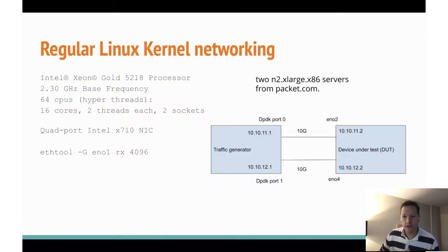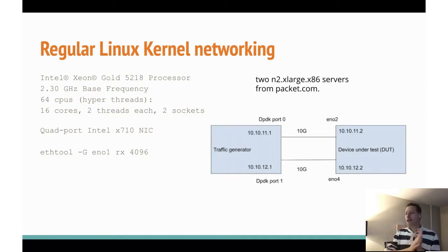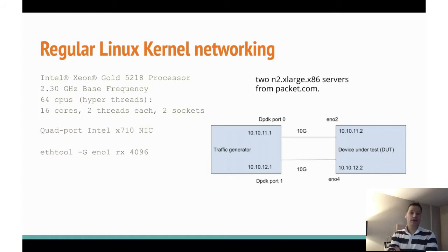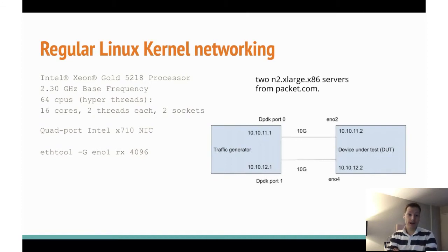Now we can do full line rate — 14 million or 28 million packets per second — and we can start measuring. The first thing I wanted to know is how fast or slow is the Linux kernel. I rented fairly heavy-duty machines at packet.com: 2.3 GHz Intel Xeon processors that can go up to 3 GHz, two sockets, each CPU socket has 16 cores with two threads each — so in total 64 cores with hyper-threading enabled. It also came with a quad-port Intel X710 NIC, so 4×10 GbE, which is pretty heavy-duty as well. Keep a good eye on the picture on the right because that's what we're going to use in various tests going forward.